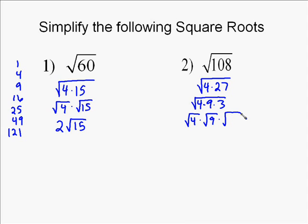So we can regroup this as square root of 4 times square root of 9 times square root of 3. The square root of 4 equals 2. The square root of 9 equals 3. And then you're left with square root of 3.